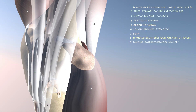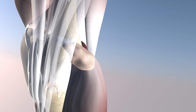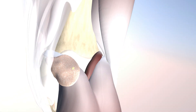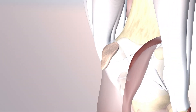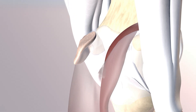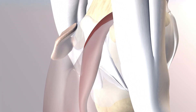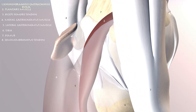Here we can see the semimembranosus tibial collateral ligament bursa that drapes over the distal semimembranosus tendon. Here we're looking at the semimembranosus medial gastrocnemius bursa — your typical popliteal cyst — basically draping over the medial gastrocnemius muscle and tendon, concave laterally.